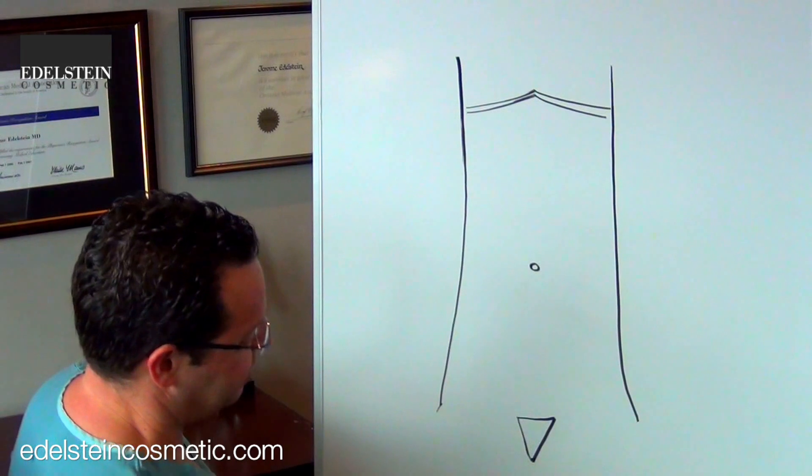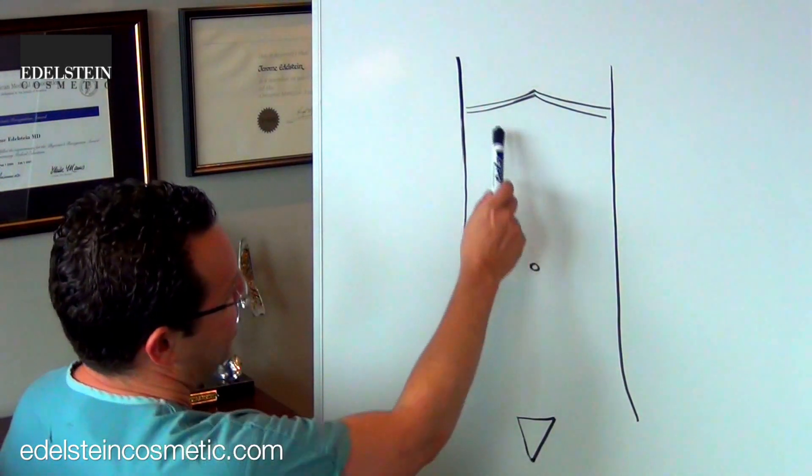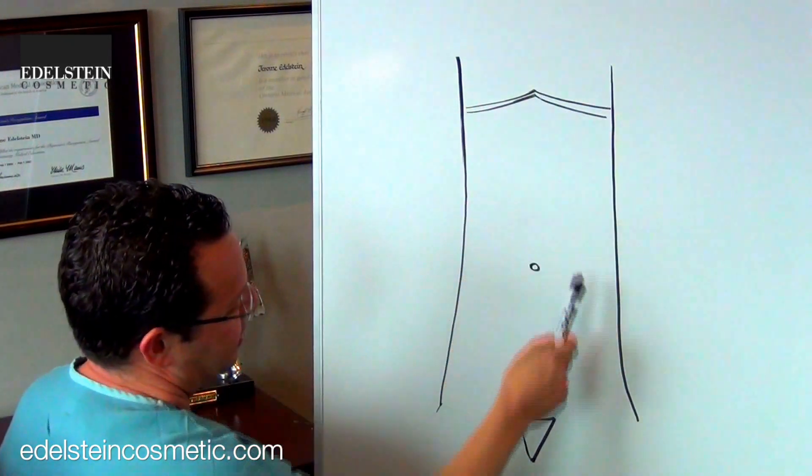Just for orientation, this is the pubic area, this is the belly button, and these are the ribs. This is obviously not necessarily to scale.